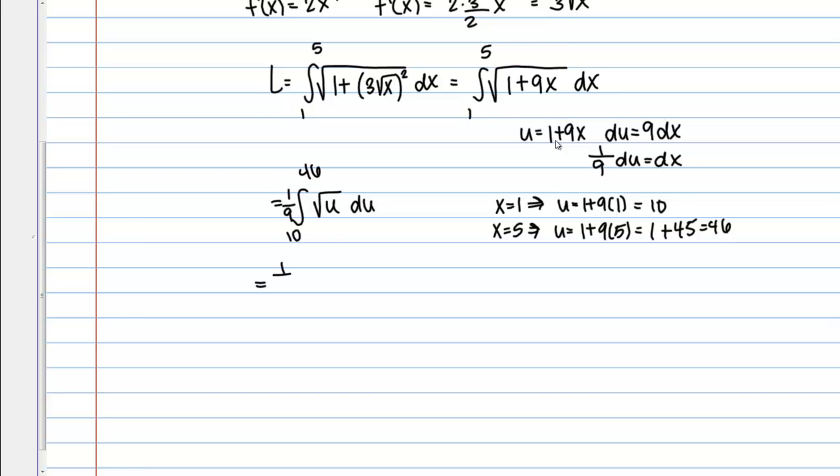Alright, so now I'm evaluating the integral of 1 9th, integral from 10 to 46, of u to the 1 half du. So if I find the antiderivative, it's going to give me u to the 3 halves over 3 halves, and I have my 1 9th out front.